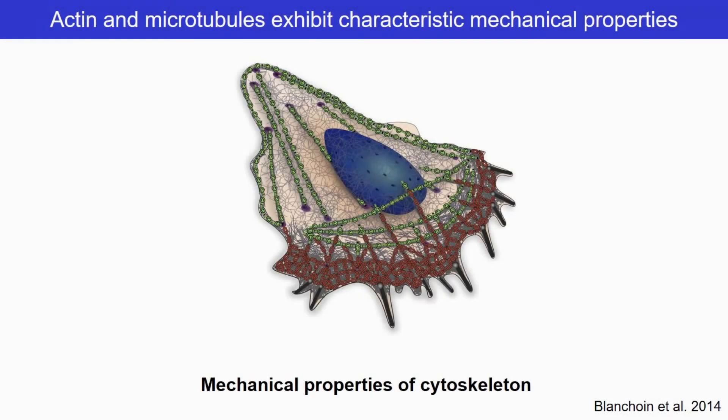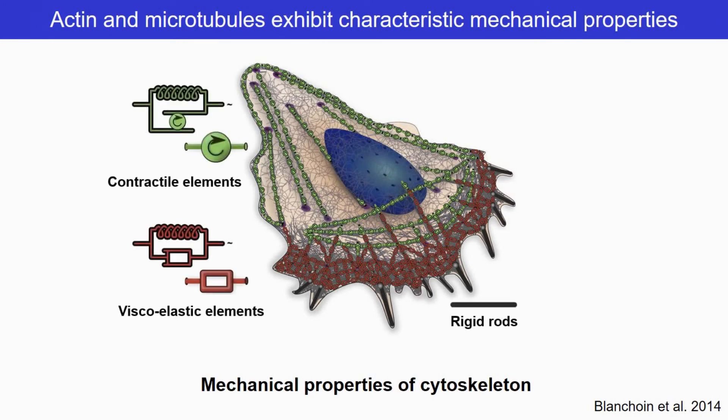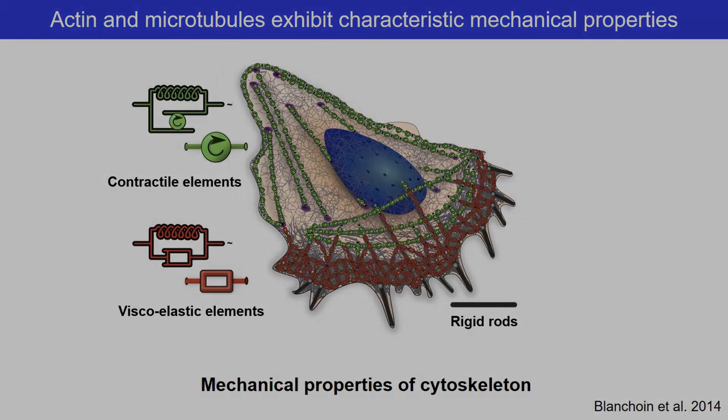These systems also display characteristic mechanical properties. Actin filaments, for example, are thinner than microtubules, and exhibit much lower stiffness and persistence length. Together, they endow cells with hybrid mechanical properties, such that the whole is greater than the sum of individual parts.